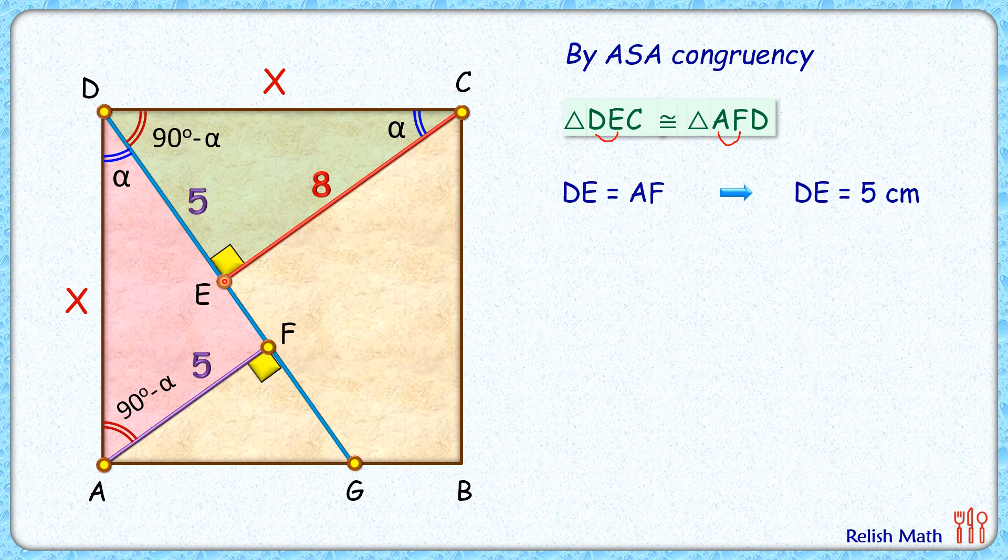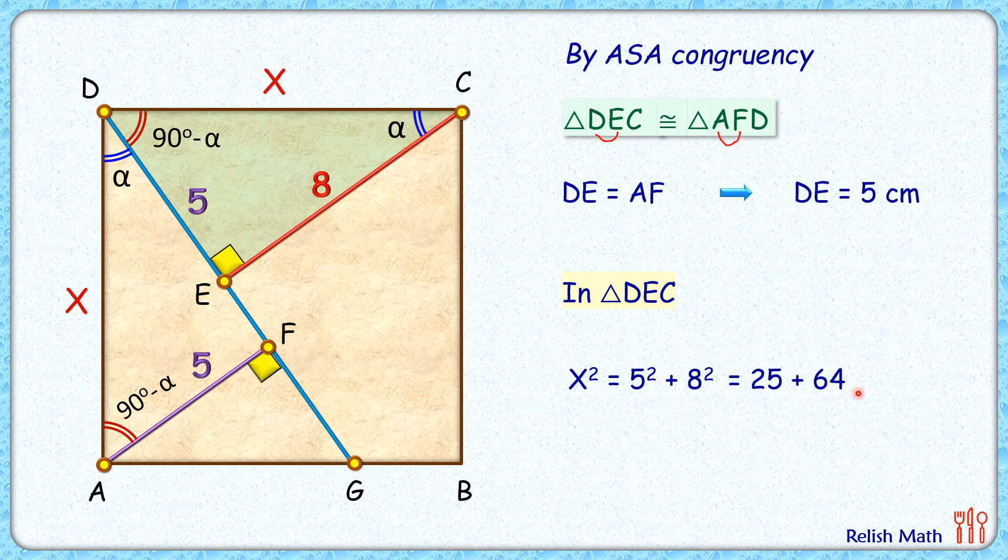Now let's concentrate on triangle DEC. In this triangle, this angle is 90 degrees, so applying Pythagorean theorem we'll get hypotenuse square, that's x square, is 5 squared plus 8 squared, or x square is 25 plus 64, or x square is 89.